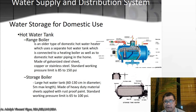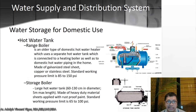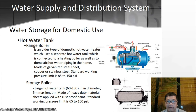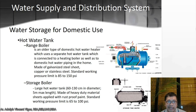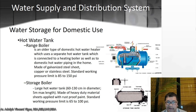For water storage for domestic use, there is the hot water tank versus the range boiler. The range boiler is an older type of domestic hot water heater connected to a heating boiler and domestic hot water piping. It's made of galvanized steel, sheet copper, or stainless steel, with a standard working pressure limit of 85 to 150 psi. The storage boiler is a large hot water tank 60 to 130 centimeters in diameter with a maximum of five meters in length, with a standard pressure limit of 65 to 100 psi.